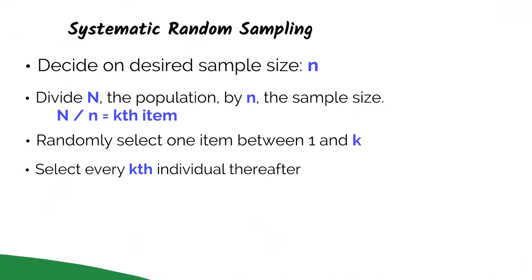We also have systematic random sampling. Here we decide how big of a sample we want, denoted by the lowercase n. Then we take the uppercase N, which is the size of the entire population, and we'll take that big N and divide it by our little n, and that will tell us our every k item. Then we will randomly select one item between one and k, and then select every k item thereafter. So that was a little complicated. Let's take a look at an example.